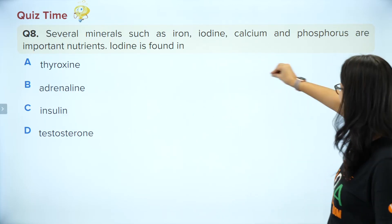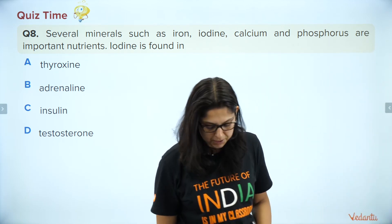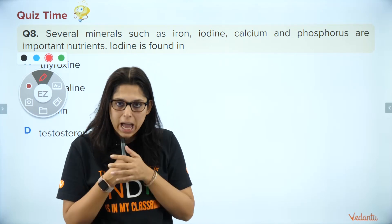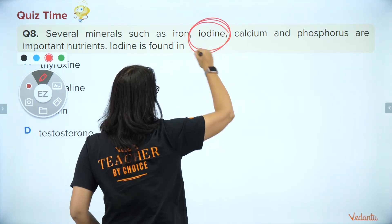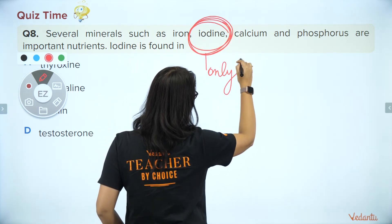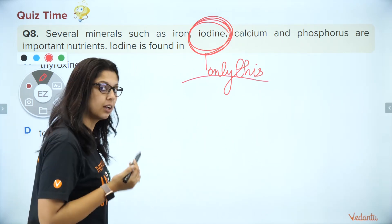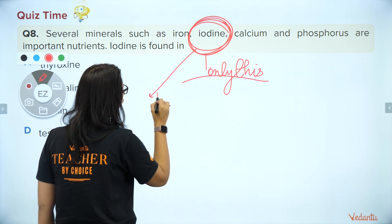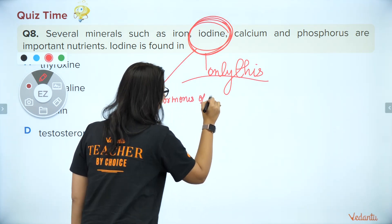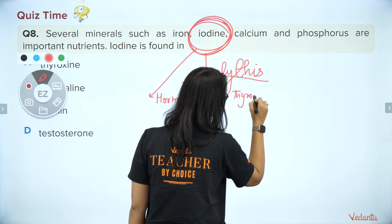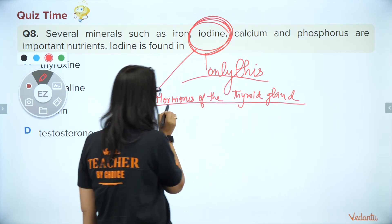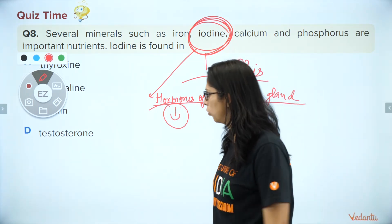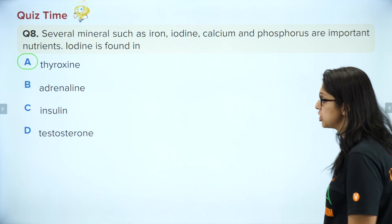Several minerals such as iron, calcium, phosphorus — focus on this one: iodine. People who don't consume enough iodine develop a swelling in the neck called goiter. Iodine forms the hormones of the thyroid gland. Specifically, iodine is associated with thyroxin to form T3 (triiodothyronine — with 3 iodines) and T4 (tetraiodothyronine — with 4 iodines). So iodine is used to make T3 and T4 thyroid hormones.